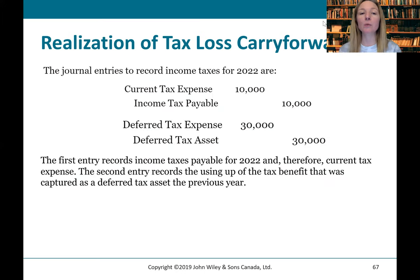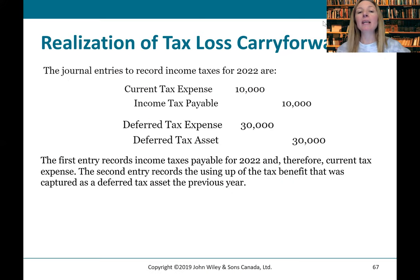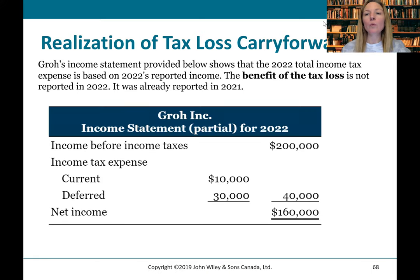The journal entries to record income taxes for 2022: debit Current Tax Expense, credit Income Tax Payable for $10,000. Then recognize deferred tax expense through the income statement to bring down the asset account: debit Deferred Tax Expense, credit Deferred Tax Asset for $30,000, clearing that account out. The 2022 income statement shows that the total income tax expense is based on 2022's reported income. The benefit of the tax loss is not reported in 2022 — it was already reported in 2021, when we accrued these amounts on our statement of financial position.